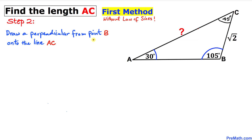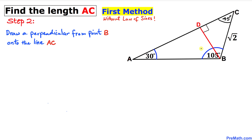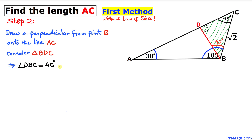For the next step, let's draw a perpendicular from point B onto line segment AC, creating point D. Now let's focus on triangle DBC. We can see angle C is 45 degrees and the angle at D is 90 degrees, so angle DBC must be 45 degrees, since the sum of all three angles must equal 180 degrees. This gives us a 45-45-90 degree special triangle.